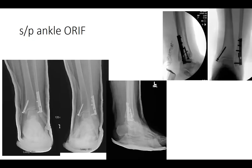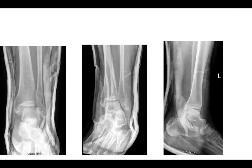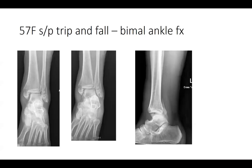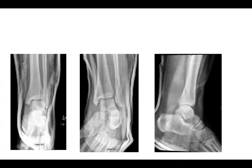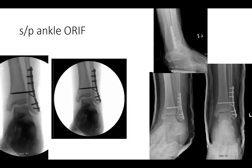Is the previous one a syndesmosis injury? There was a small posterior malleolus piece that was displaced initially, so we decided to put a syndesmosis screw across just for the posterior malleolus. The fibula is perfectly aligned with the tibia. There is a posterior malleolus piece which would indicate the PITFL was avulsed off — a bony avulsion.